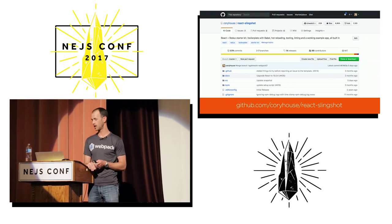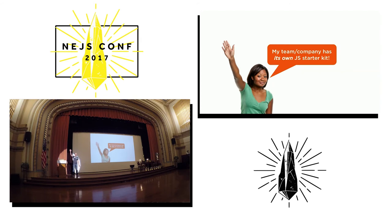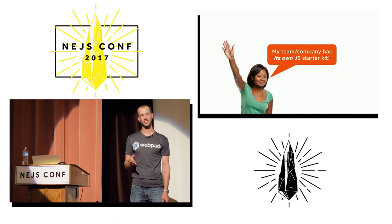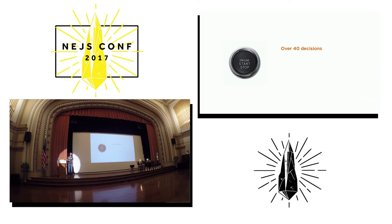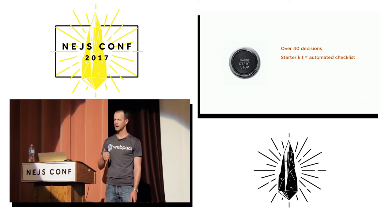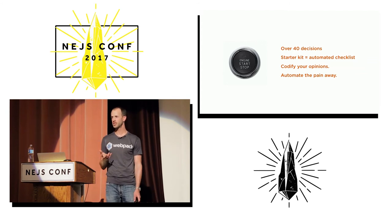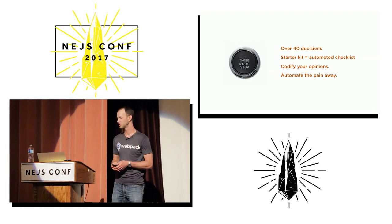Question: how many of you will say your team or company has its own JavaScript starter kit? That's about 4% of the room — a very, very small number. The future is here, it's just not evenly distributed. Starting with file new project is just too much work. Your team has a large set of opinions — over 40 decisions to make. A starter kit operates as an automated checklist so you can codify your opinions and automate the fatigue away. My team is not fatigued anymore.